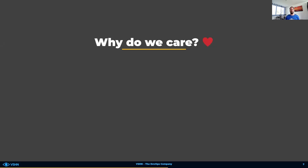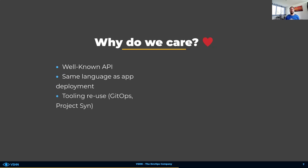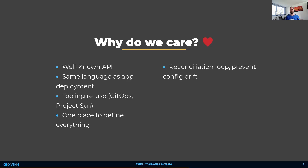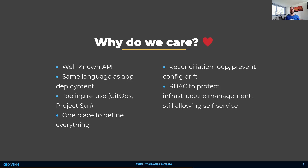These concepts and features are the reasons why we at Vision and I personally care a lot about Crossplane. We can leverage the well-known Kubernetes API — it's the same language we also use to deploy applications. This allows us to reuse already existing tooling like GitOps, CI/CD pipelines, or ProjectSIM. The infrastructure and deployment needs of an application can be defined in the same place. As Crossplane runs a reconciliation loop all the time, configuration drift isn't possible anymore. The control plane is always active, looking for changes on the upstream configuration. If it doesn't match the declared configuration, it simply makes sure to adhere to it. And last but not least, RBAC allows you to protect infrastructure provisioning and configuration while allowing self-service in an easy way.